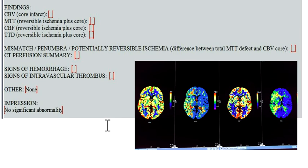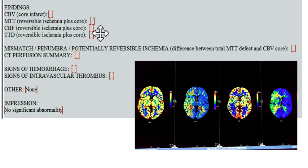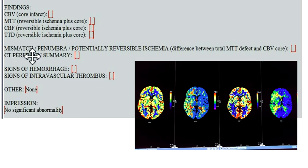Then fill out the report template. List the findings on the four sequences. For CBV core infarct in this case, you'd say normal or no defect. For MTT, you'd note large MTT defects throughout the entire right middle cerebral artery territory. For CBF and TTD, you can basically copy and paste since findings are similar. For the mismatch, you'd say there's a large mismatch defect on the right with no underlying core infarct. Your CT perfusion summary: large area of potentially reversible ischemia throughout the right MCA territory with no underlying core infarct.